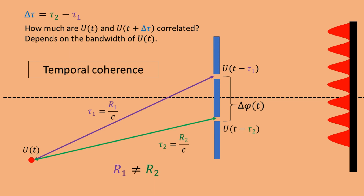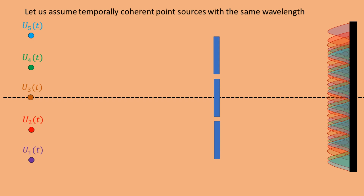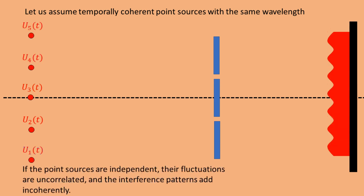Fields with a narrow bandwidth have a high temporal coherence, and fields with a broad bandwidth have low temporal coherence. If a field is almost monochromatic but not quite, because it still has a finite bandwidth — in this case called the line width — we call it quasi-monochromatic. For the next part of our discussion, let's assume we have quasi-monochromatic point sources with high temporal coherence. Because they have a high temporal coherence, each point source creates an interference pattern with clear fringes, and the position of the interference pattern depends on the position of the point source. So if we have multiple quasi-monochromatic point sources at different locations, we get multiple shifted interference patterns. Because the different point sources are independent, their fluctuations are uncorrelated, and so the intensities of their interference patterns add incoherently, and we observe an interference pattern with reduced fringe visibility.